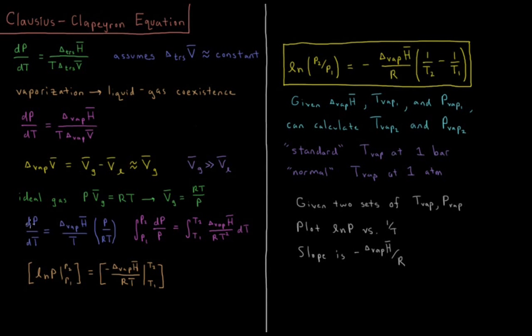So if we substitute that in, we have dP/dT equals the molar enthalpy change of vaporization divided by T times P over RT.